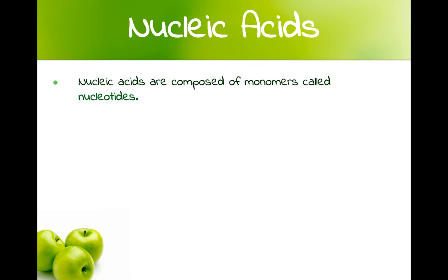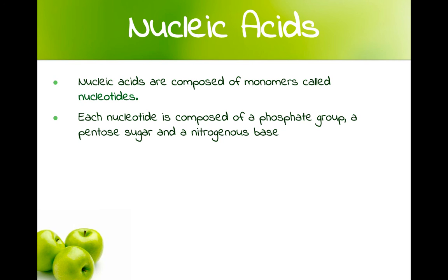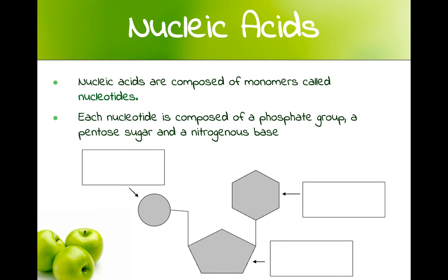The last macromolecule group is nucleic acids, like DNA and RNA. Nucleic acids are composed of monomers called nucleotides. Each nucleotide is composed of a phosphate group, a pentose sugar — which is like a carbohydrate but with only five carbons, unlike glucose which has six — and a nitrogenous base. As you continue your studies in biology, you'll get more familiar with this structure. These components link together to make the chains we know as DNA or RNA.